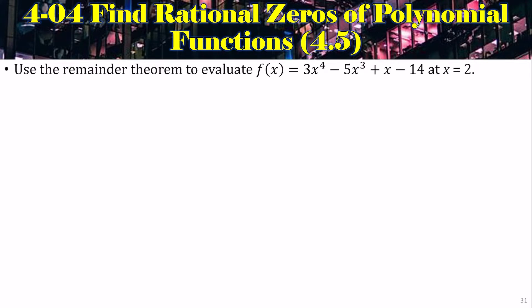So let's use the remainder theorem to evaluate this function at x equals 2. Alright, so we divide by x minus 2, so I'm going to put 2 in our box. And then the coefficients are 3x to the 4th, negative 5x cubed, 0x squared, 1x and negative 14. Bring down the 3, and multiply. 2 times 3, 6. And then we add. We multiply 2 times 1. We add. Multiply 2 times 2. We add. Multiply 2 times 5. Then we add. The remainder is negative 4. Therefore, f of 2 is negative 4.